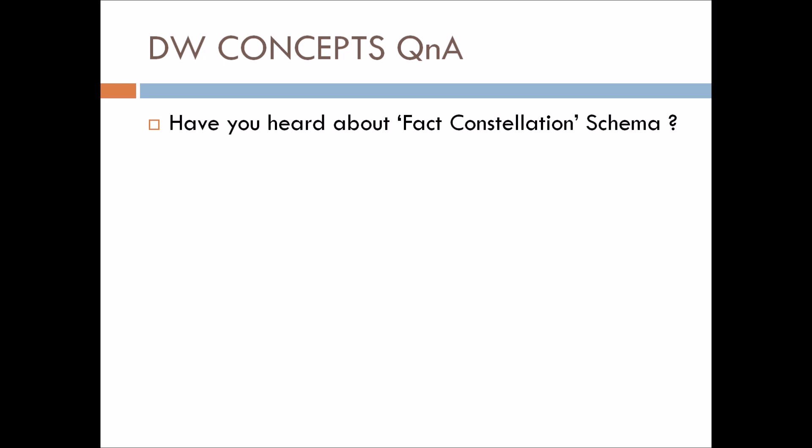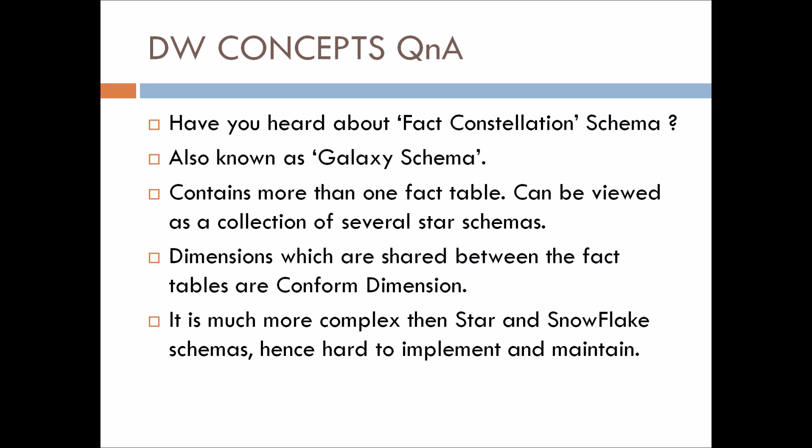Next question: have you heard about fact constellation schema? Fact constellation schema is also known as galaxy schema. It contains more than one fact table and can be viewed as a collection of several star schemas. Dimensions shared between fact tables are called conformed dimensions. It is much more complex than star and snowflake schemas, making it harder to implement and maintain.